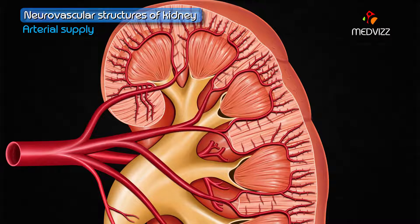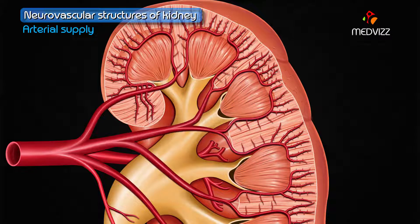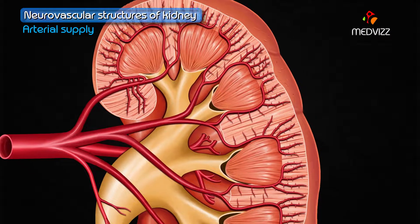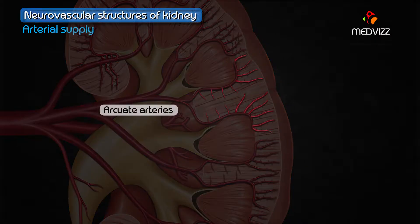Each segmental artery divides into lobar branches after supplying the renal sinus. The lobar arteries are further divided into two or three interlobar arteries, which pass between the pyramids.